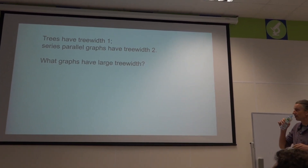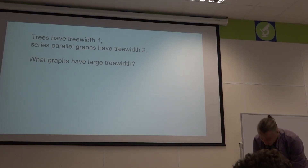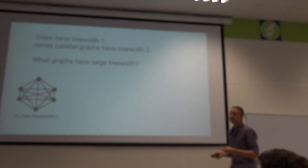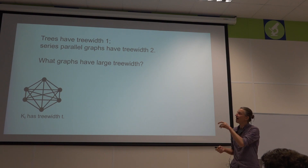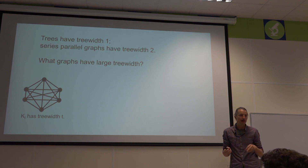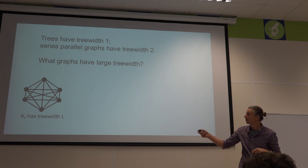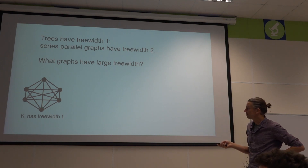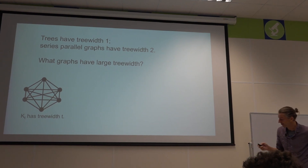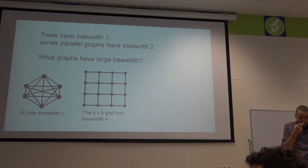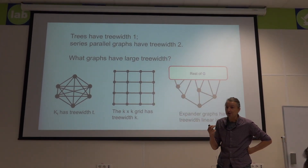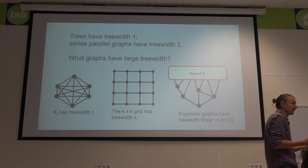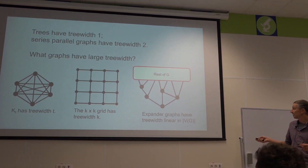What graphs have large tree width? Cliques: a clique Kt has tree width order t. Grids: the k-by-k grid has tree width k. And expander graphs have tree width linear in the number of vertices. The k-by-k grid is an important example — if you contain the k-by-k grid as a minor, then the tree width of G is at least k.